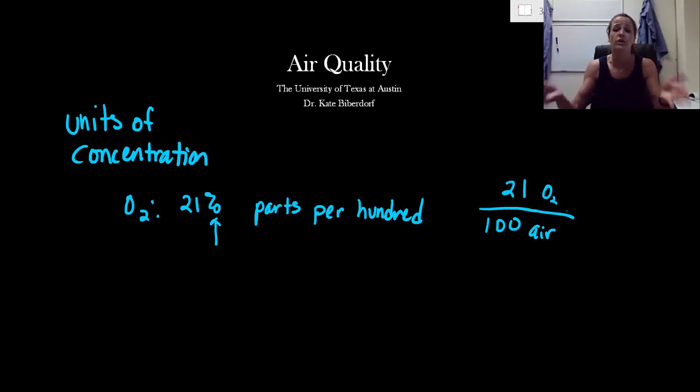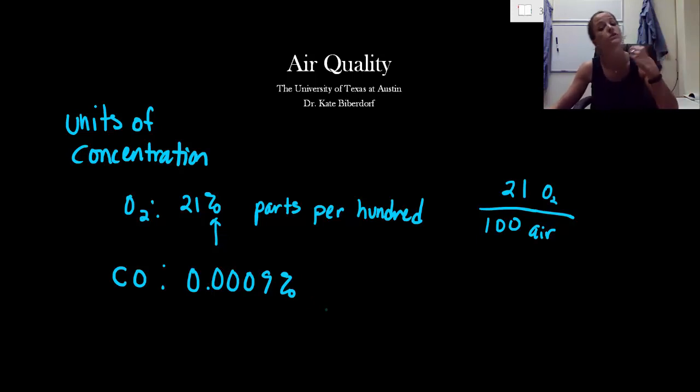We can do the same thing for even smaller amounts of units. So these units that we need are parts per million or parts per billion in order to actually describe the concentration of our pollutants. So let's talk about carbon monoxide. For a very standard amount of carbon monoxide in our atmosphere would be 0.0009%. But that is not a useful thing. You could not quickly tell me 0.0009% and for me to be able to magically come up with a fraction in my head.